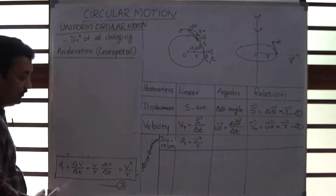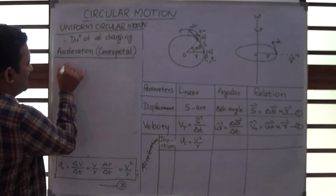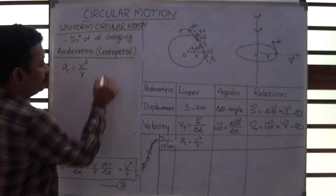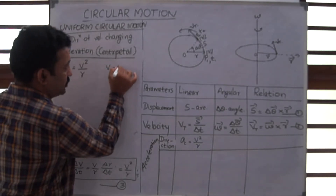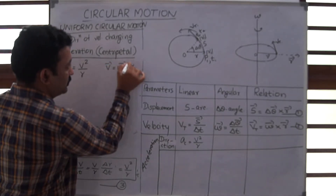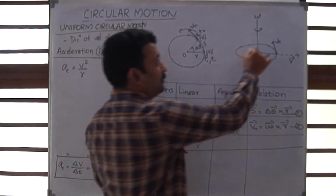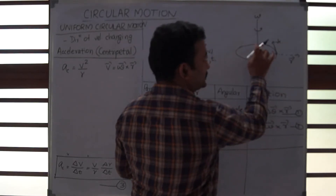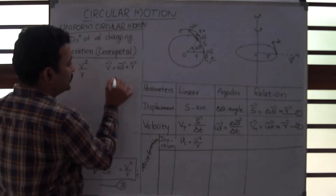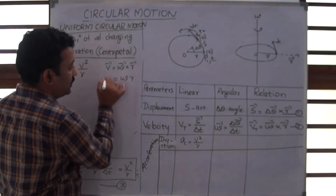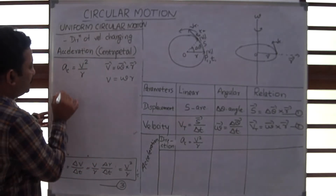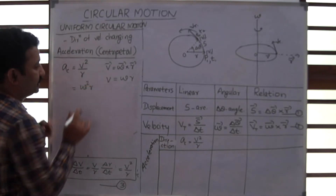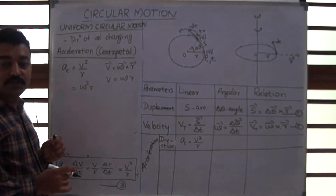I can represent centripetal acceleration in different expressions. AC is equal to V squared divided by R. We also have V equal to omega cross R, where omega is upward, R is towards the radius, and since these two make 90 degrees with each other, this simplifies to V = omega R. Substituting, centripetal acceleration becomes omega squared R — that is another expression for centripetal acceleration.